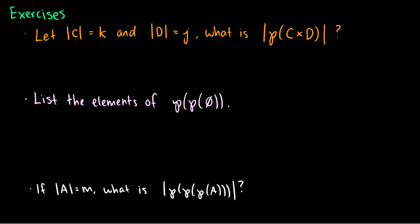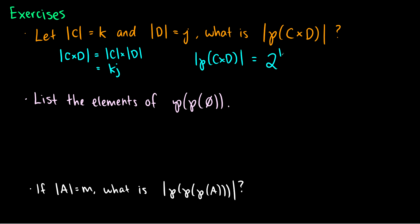Let's do some exercises. First: if the size of C equals K and the size of D equals J, what is the size of the power set of C cross D? The size of C × D equals the size of C times the size of D, which is K times J. Therefore the size of the power set of C × D is 2 to the power of K times J. When you take Cartesian products with power sets, things get very large very fast.